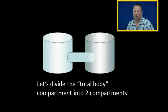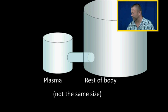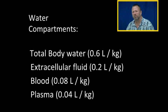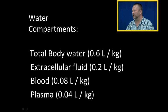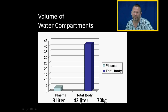Now let's divide the total body water into two compartments: the plasma compartment — the liquid component of blood — and the rest of the body. These two compartments are not the same size. Total body water is 0.6 liters per kilogram, extracellular fluid is 0.2 liters per kilogram, blood is 0.08 liters per kilogram, and plasma is 0.04 liters per kilogram. So the plasma compartment of a 70 kg person is about 3 liters, whereas total body water is 42 liters.